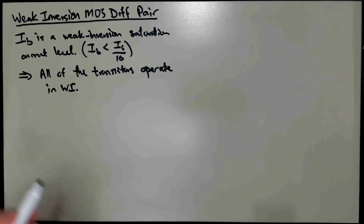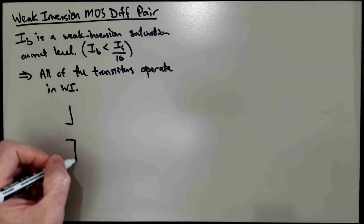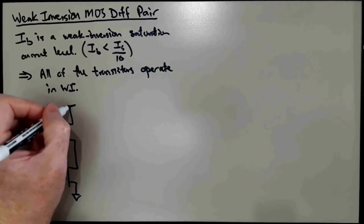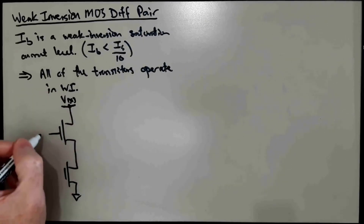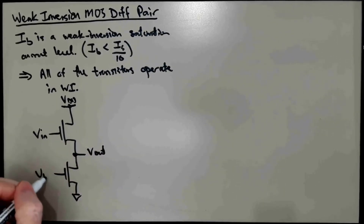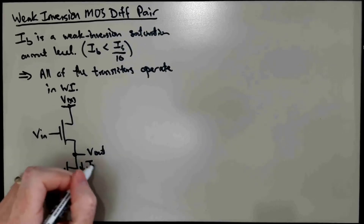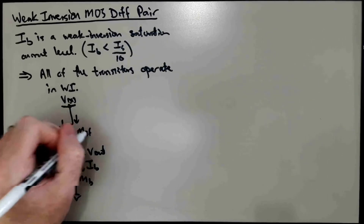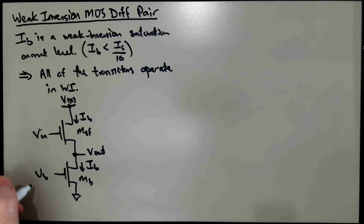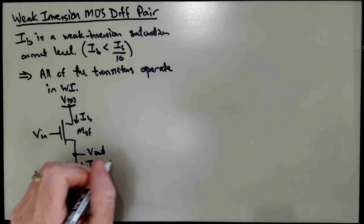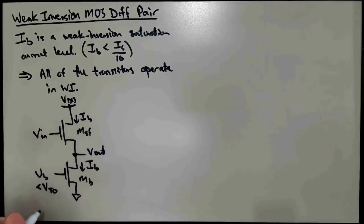And that may surprise you. So let's think about the source follower. There's one transistor aside from the bias transistor. We have a Vin and a Vout and a VB. That sets up an Ib flowing in MB, and that Ib also flows in MSF. We could say that VB is less than VT0, so that Ib is a weak inversion current.